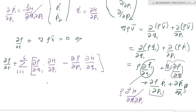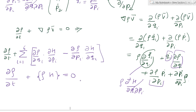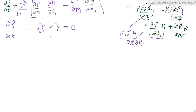This remaining expression can be written as a Poisson bracket: del ρ / del t + {ρ, H} = 0. This is the equation of continuity reduced to its simplest form using the Poisson bracket of the phase space density ρ with the Hamiltonian H. This result is called Liouville's theorem.